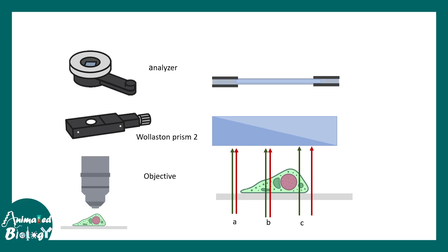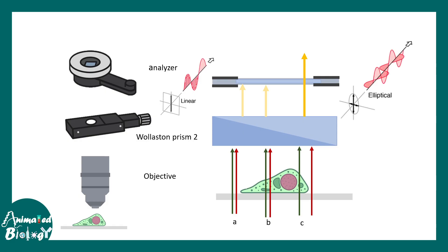Let us consider three scenarios A, B, and C. In scenario A, both ordinary and extraordinary light pass through the slide and reach the second Wollaston prism after the objective. In scenario B, both beams pass through regions of the same refractive index, so there is no optical path difference. In scenario C, there is an optical path difference because the ordinary and extraordinary light pass through regions where refractive index and thickness are very different, so beam C is retarded. This optical path difference creates elliptically polarized light, which can cross the analyzer, while the linearly polarized light from scenarios A and B is blocked. This is how the DIC microscope works overall.